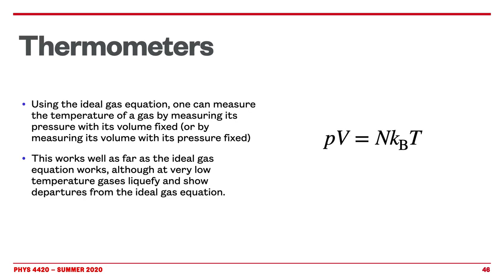Any relationship between measurable properties and temperature will work as a thermometer. For example, the ideal gas equation PV = NkBT: if we keep volume and number of molecules constant, measuring the pressure gives information about temperature. Or if you keep pressure constant but modify volume, you also get a gauge of temperature. All this shows that measuring temperature is possible, thanks to the zeroth law.